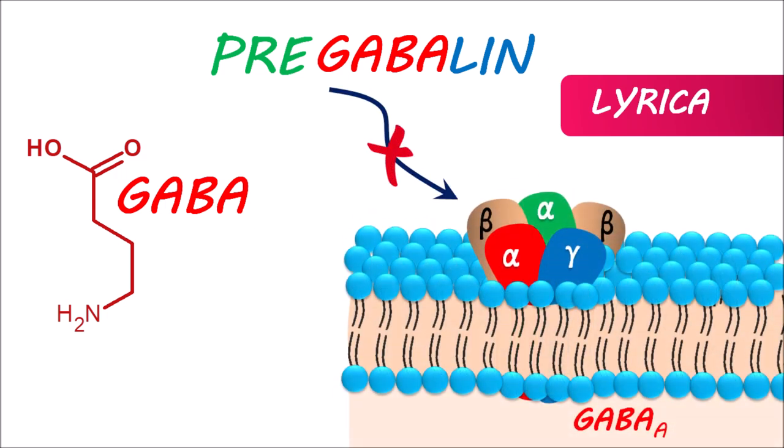Then how can pregabalin affect neuronal conduction? Pregabalin reduces the opening of calcium channels, thereby reducing impulse conduction.